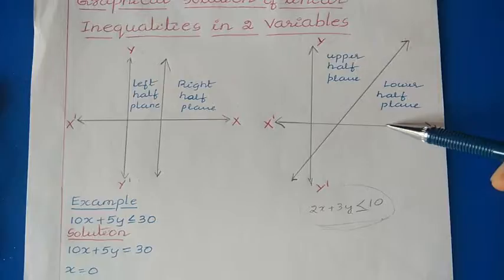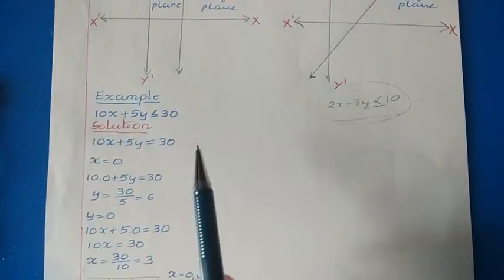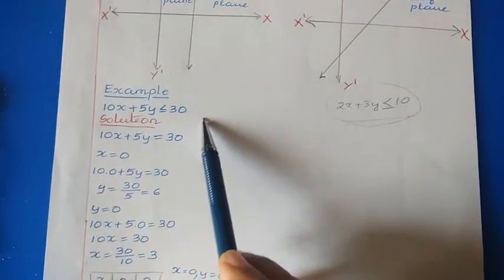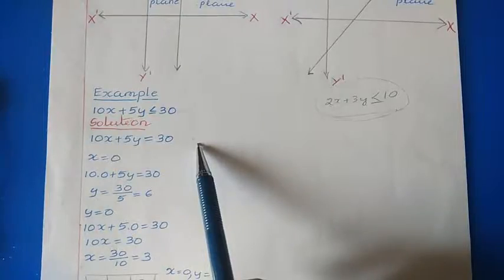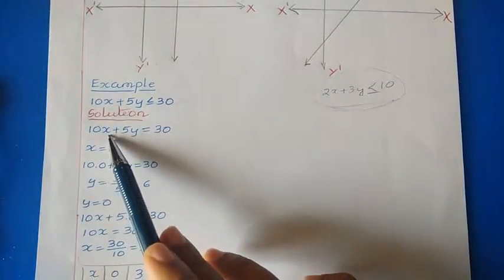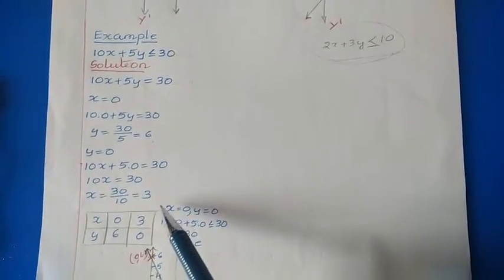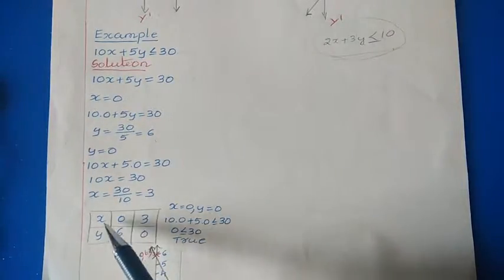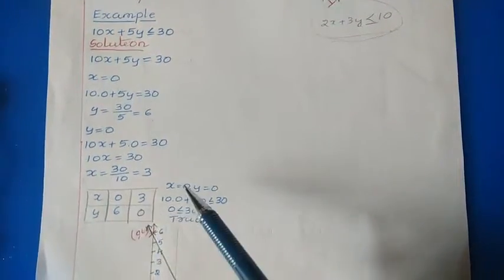Now let us see how to represent that. I have taken an inequality: 10x plus 5y less than or equal to 30. The first step is to find the solution for this linear inequality — convert it into an equality statement. The next step is to take x equal to 0 and y equal to 0 separately and find the solution. If I put x equal to 0, I get y equal to 6. And if I put y equal to 0, I get x equal to 3. So we have two solutions: (0, 6) and (3, 0). Based on these two solutions, we try to locate the line on the graph.